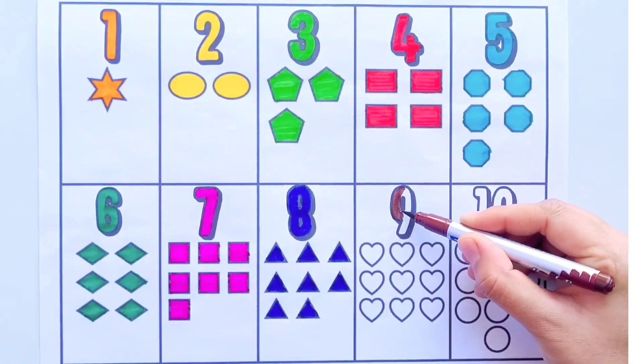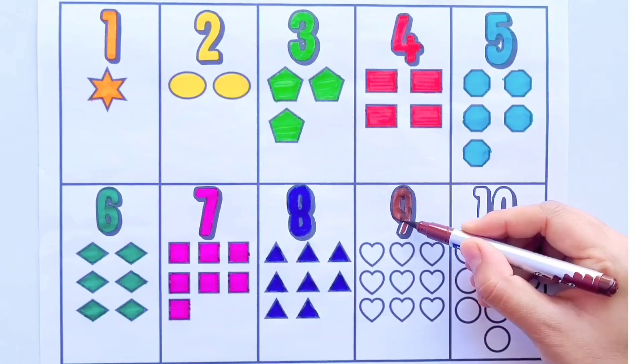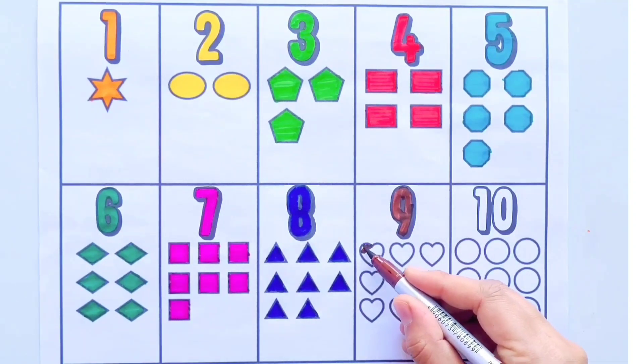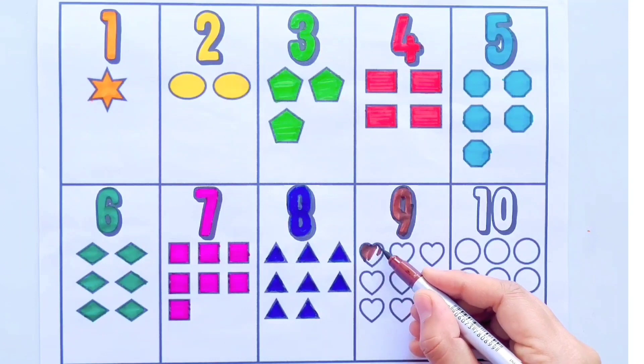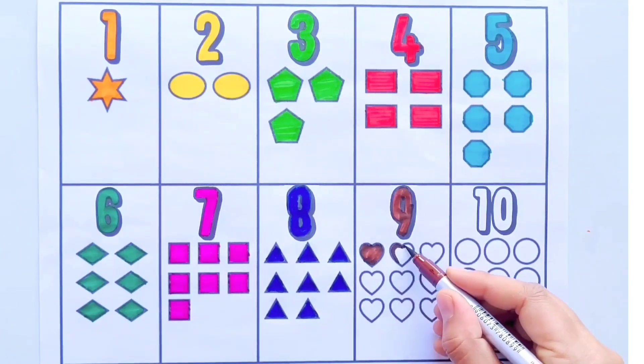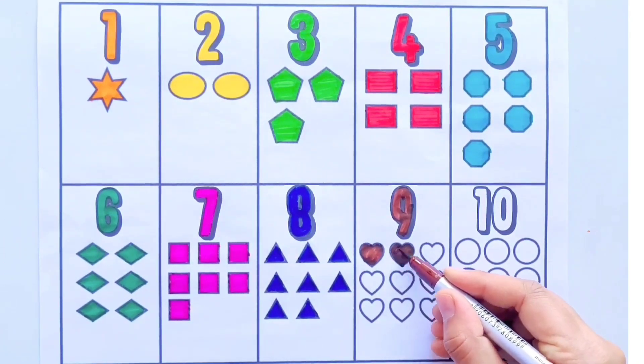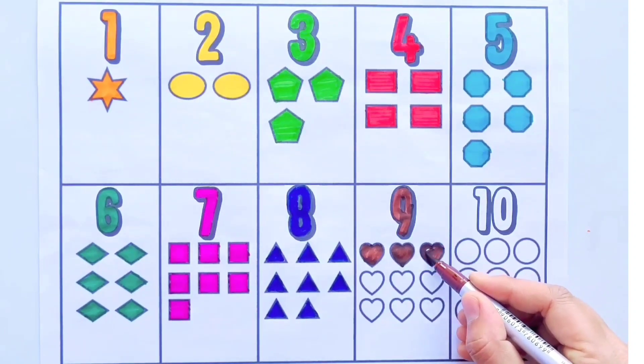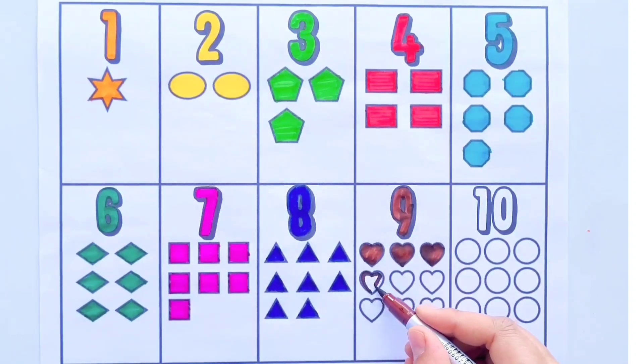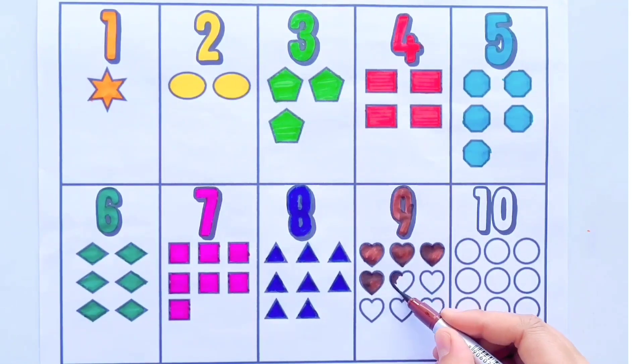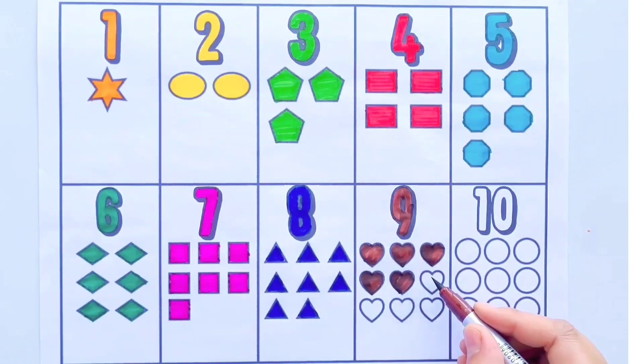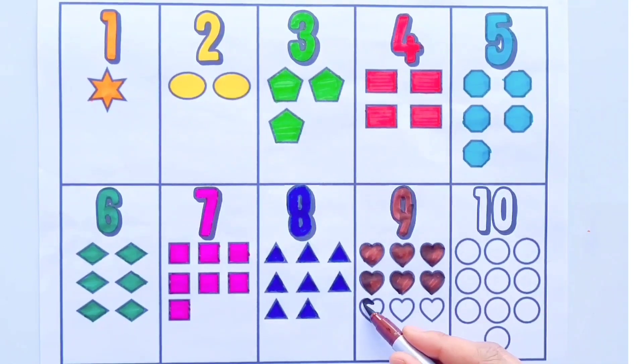Brown color. Nine. One, two, three, four, five, six, seven, eight, nine. Nine hearts.